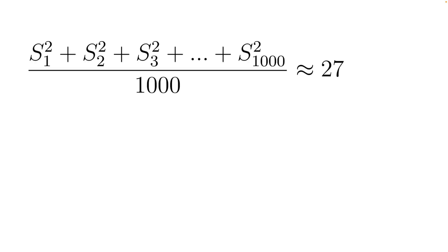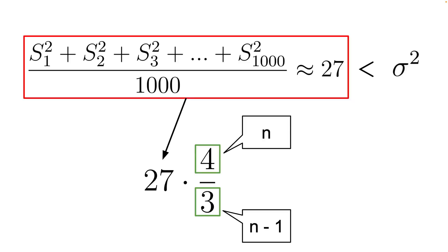Actually, if we were to repeat this experiment a lot of times and take the average of the variances, we would have observed that we ended up with a value that is lower than the population variance. Even more interesting, if we were to multiply this value with 4, the number of samples, and divide it by 3, the number of samples minus 1, we would end up with a value that is quite close to the population variance.